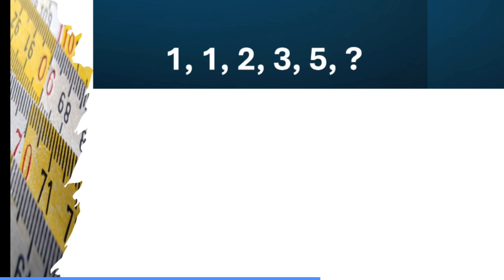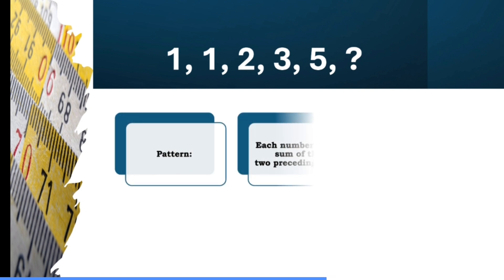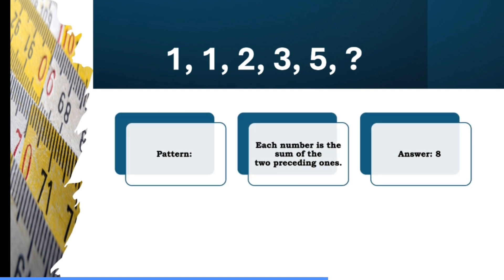Here: 1, 1, 2, 3, 5 — what should be the next number? The pattern is that each number is the sum of the preceding two numbers. Before the first 1, nothing is there, so 1 plus 0 equals 1. Then 1 plus 1 equals 2, then 1 plus 2 equals 3, then 2 plus 3 equals 5. So the next number is 3 plus 5, which equals 8.